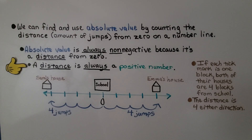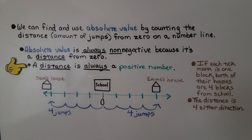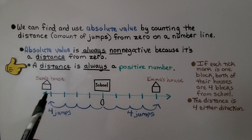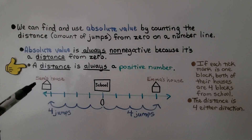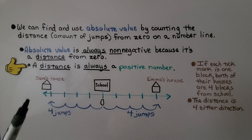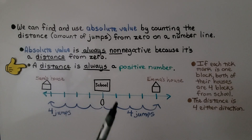We can find and use absolute value by counting the distance — the number of jumps from zero on a number line. An absolute value is always non-negative because it's a distance from zero. A distance is always a positive number. Here we have a number line with Sam's house, the school, and Emma's house. If each tick mark is one block, both of their houses are four blocks from school.